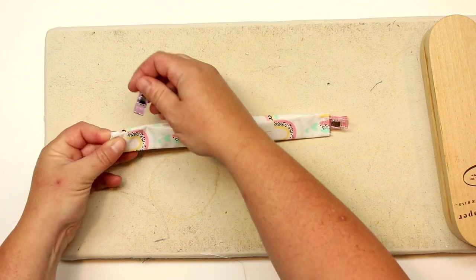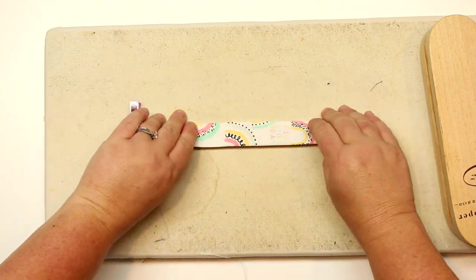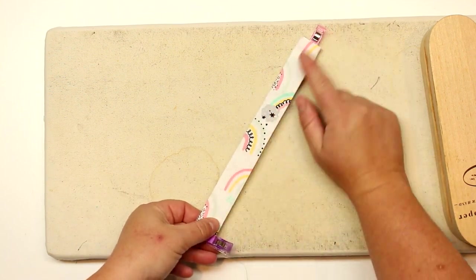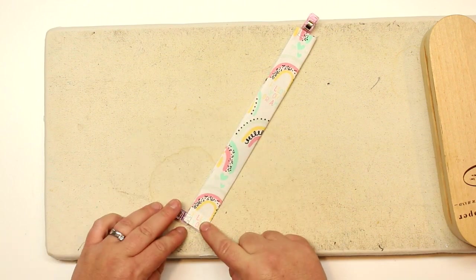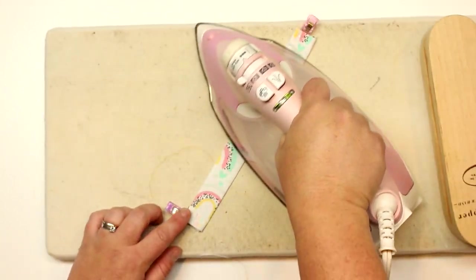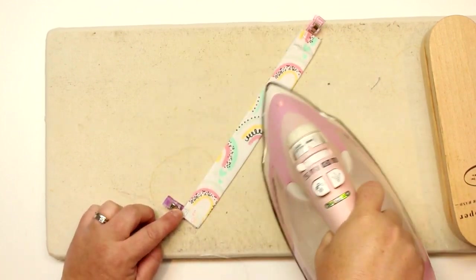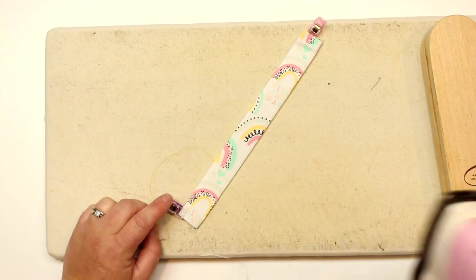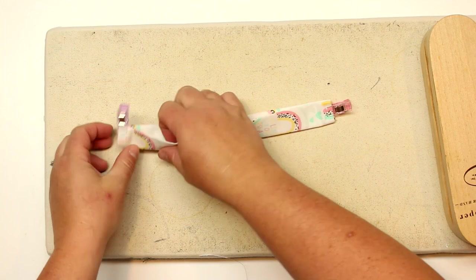If you pay attention to how you cut your fabric, you can sort of try to line up cute little sayings. Like this one says follow your dreams, so it kind of lines up perfectly so you can actually see it once the clip is constructed. This is pretty much all you're going to need to do to create the strap for your pacifier clip, very simple.